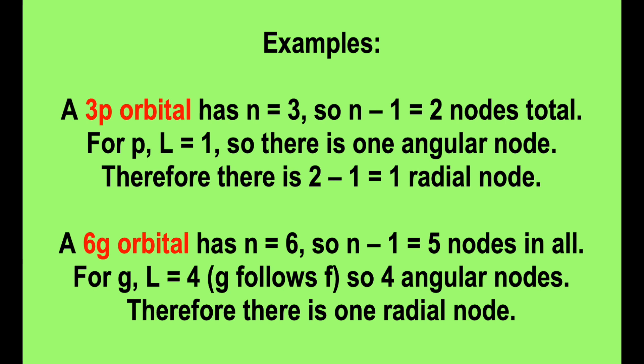Likewise, a 3p orbital has n equals 3, L equals 1, so there's one angular node and one radial.